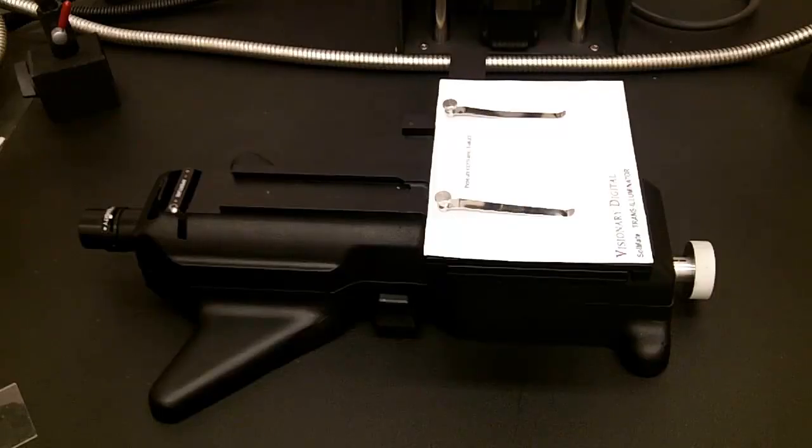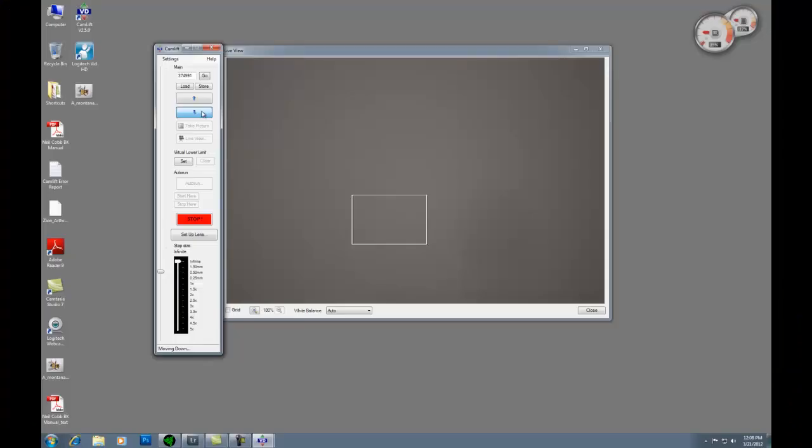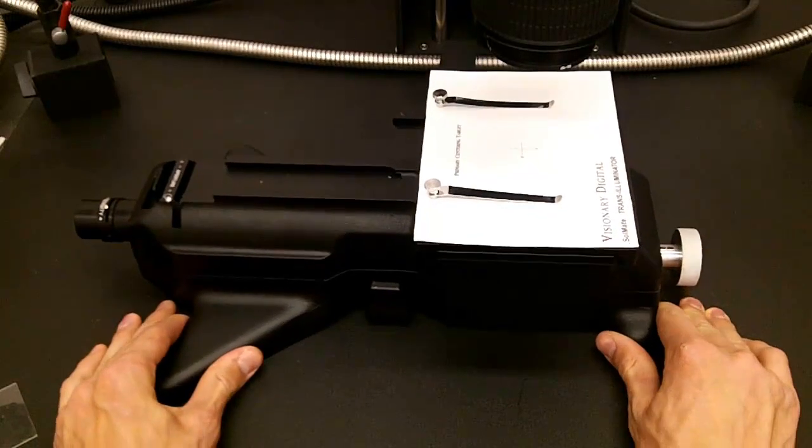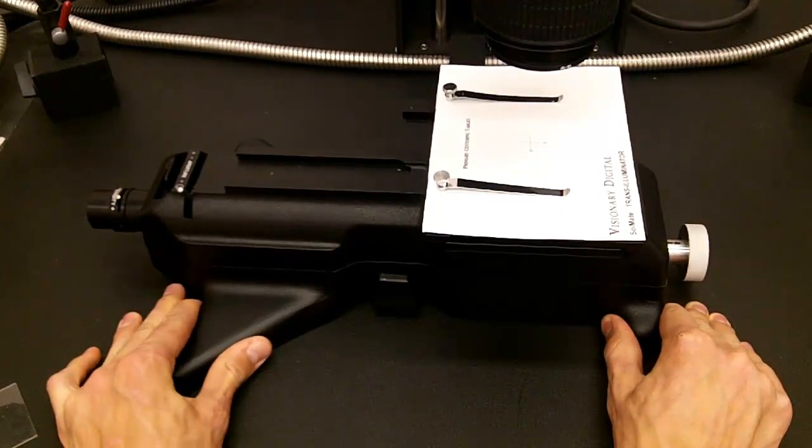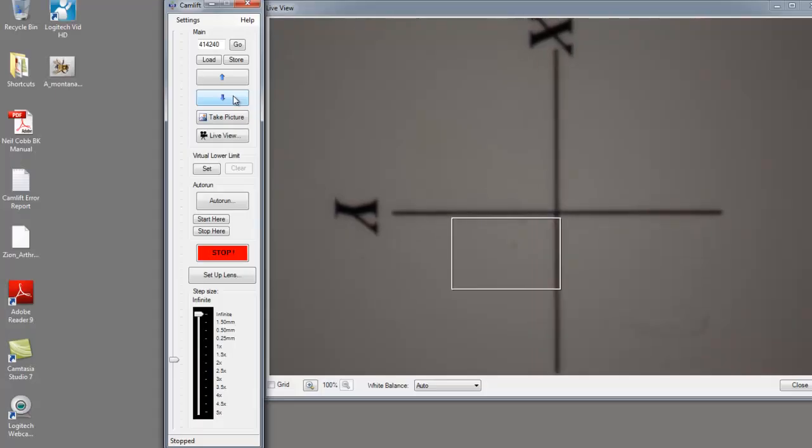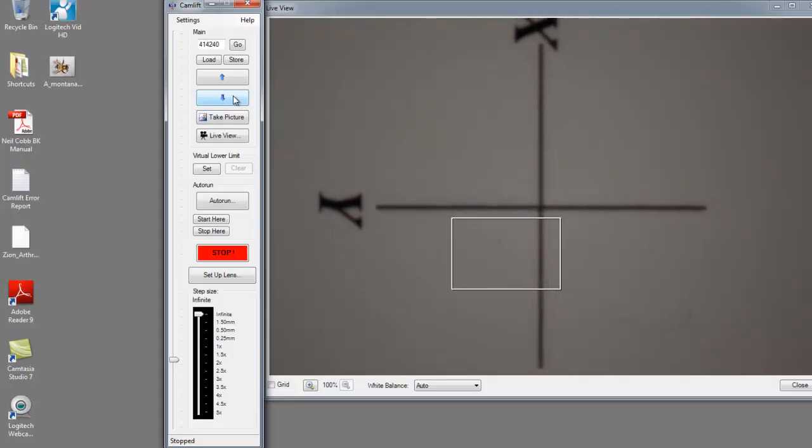Once you have the camera set up, the first step is to center the soulmate. First bring down the camera until the crosshairs on the targeting sheet are in view. Then physically move the soulmate so that the crosshairs on the targeting screen are centered in your field of view. This will make sure that the soulmate is centered and that your specimen is right over the lighting where it needs to be.